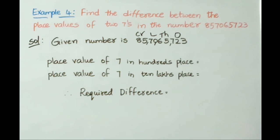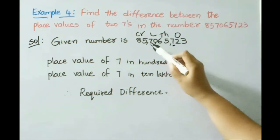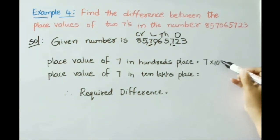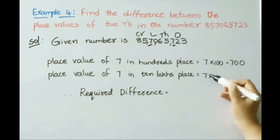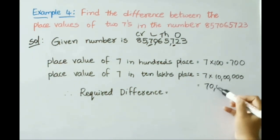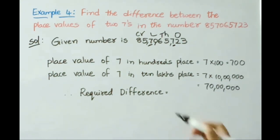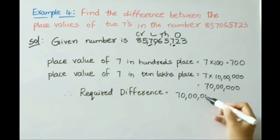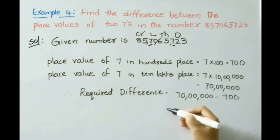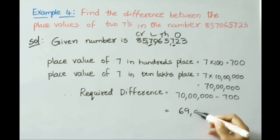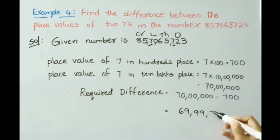Now let us find the place value of 7 in the hundreds place and the place value of 7 in the 10 lakhs place. Hundreds place: 7 × 100 = 700. 7 in 10 lakhs place: 7 × 10 lakh = 70 lakh. Now we find the difference: 70 lakh minus 700 = 69,99,300.